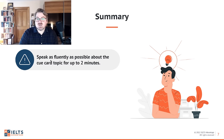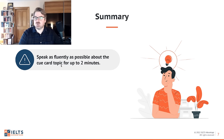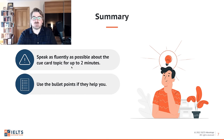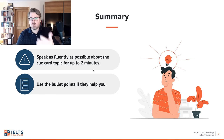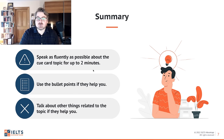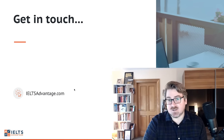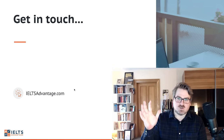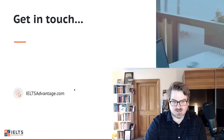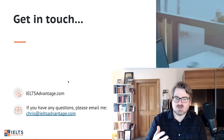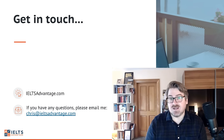What I did there was cover the first three bullet points in under 30 seconds, then went deep into why I enjoy that walk, adding extra detail about the forest that wasn't strictly in the bullet points. To summarize: speak as fluently as possible about the cue card topic for up to two minutes. Do whatever helps you and don't do whatever hinders you. Use the bullet points only if they help you, and feel free to talk about other things related to the topic. If you want to get in touch, visit ieltssadvantage.com or email chris@ieltsadvantage.com.